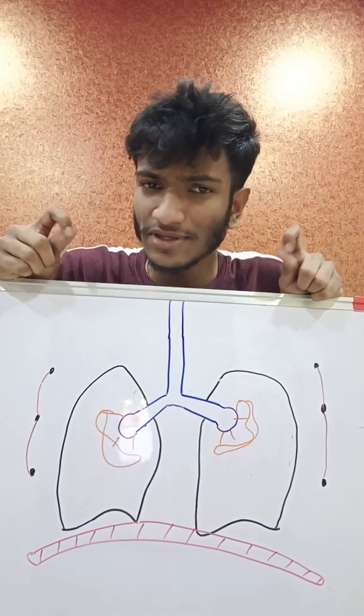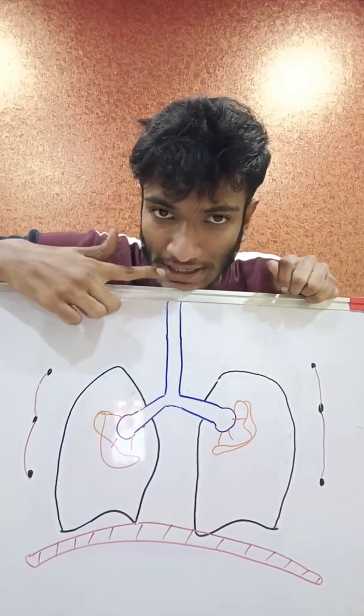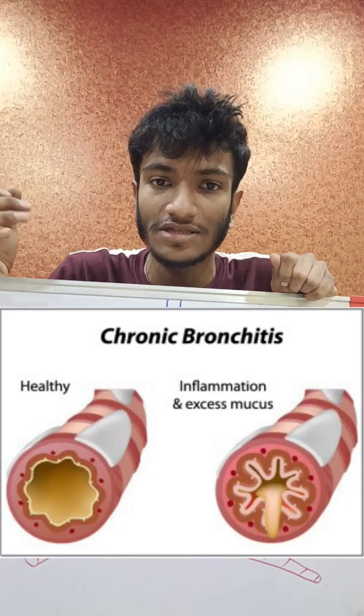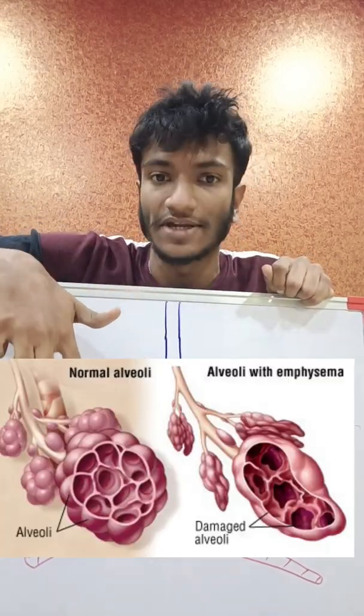In obstructive lung disease, something is stopping the air from going in and out. This can be seen in cases of chronic bronchitis or emphysema, where the airways or elastic tissue are affected.